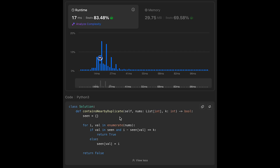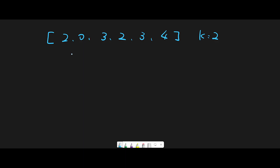Let's talk about the second solution. Let me explain with this example: [2, 0, 3, 2, 3, 4] and k equal to 2. In solution 1, each time I found a nearby number and its index from the current index, I kept track of them. The basic idea in solution 2 is similar, but the method of keeping track of nearby numbers is different.